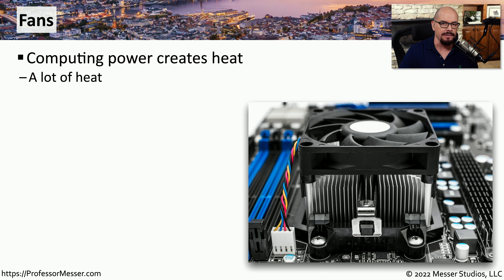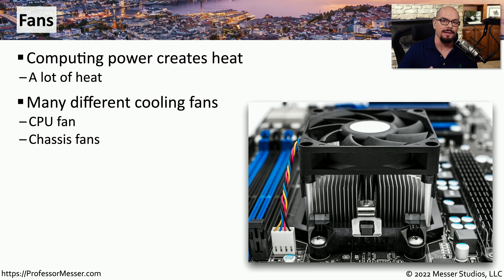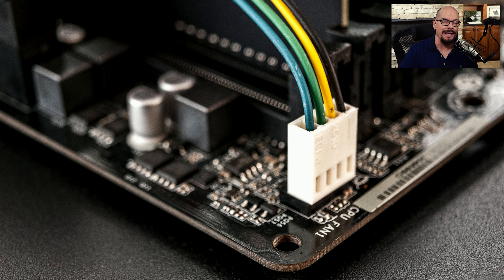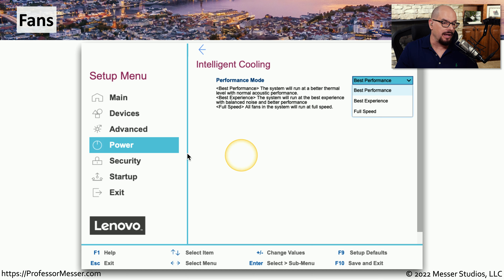Our computing systems create a lot of heat, and there are usually fans inside computers to help keep everything cool. You can usually control what those fans are doing through BIOS configurations. You might have a fan dedicated to cooling the CPU and other fans cooling the rest of the chassis. Many motherboards have an integrated fan controller that can look at the temperature inside your system and increase or decrease airflow accordingly. To use this controller, you need to connect directly to the fan connections on the motherboard. In this Lenovo BIOS, it's under the Power option, under Intelligent Cooling, where you can choose between better performance or a quieter system.